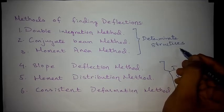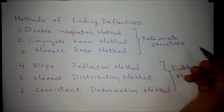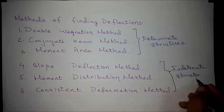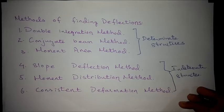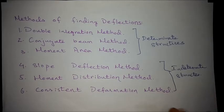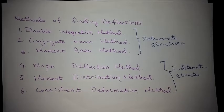Determinate structures are the structures where reactions can easily be found out by three equilibrium equations for a two-dimensional case, while indeterminate structures are those structures which are either unstable or the reactions cannot be found out by the three equilibrium equations. This was the required concept for deflection and rotation.